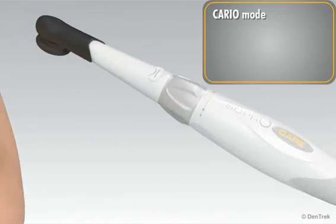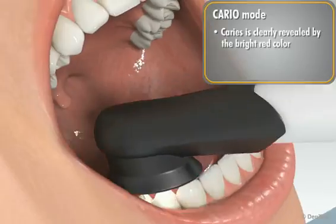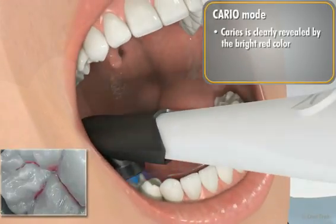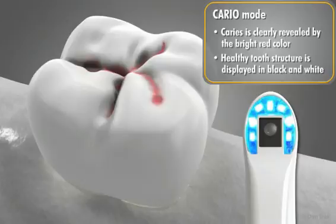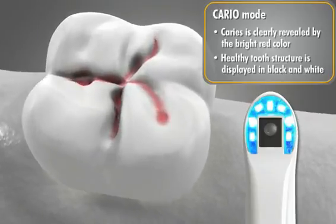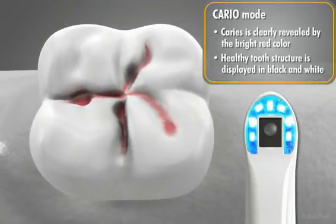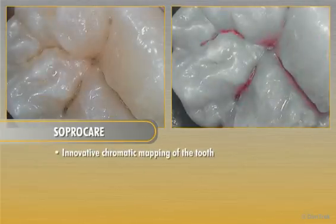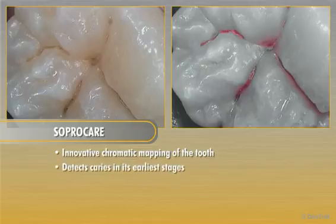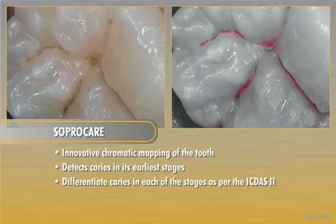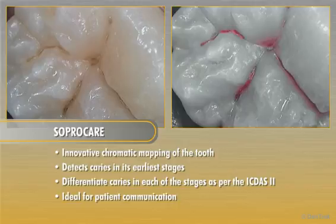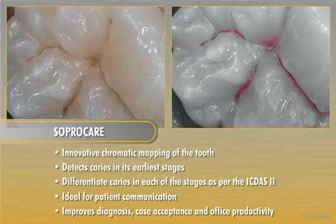In cario mode, enameled dentinal caries is clearly revealed by the bright red color. Healthy surrounding tooth structure is displayed in black and white, drawing the clinician's focus only to the carious lesion. SOPROCare's innovative chromatic mapping of the tooth allows the dental professional to detect caries in their earliest stages, differentiate them in each of the stages as per the ICDAS-2, and effectively communicate treatment plans and clinical procedures to the patient, improving diagnosis, case acceptance, and office productivity.